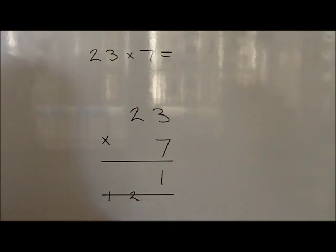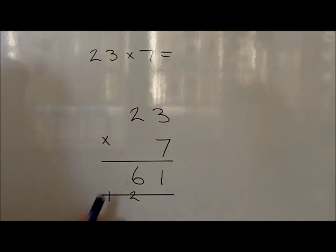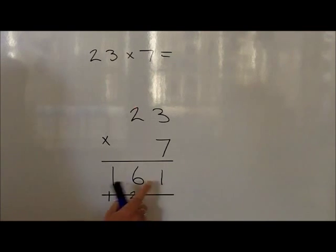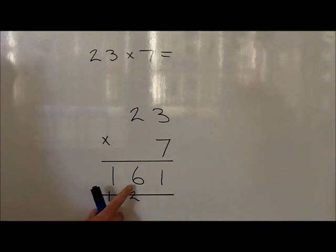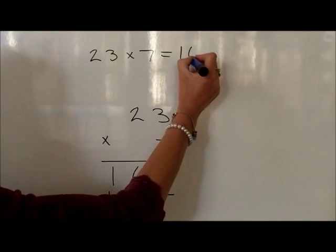Carrying the 100 and writing a 6 in the tens. We now look at the hundreds — with no hundreds to multiply by, so we just carry the 100 at the bottom, which gives us an answer of 161. So 23 times by 7 is equal to 161.